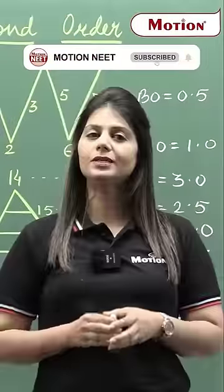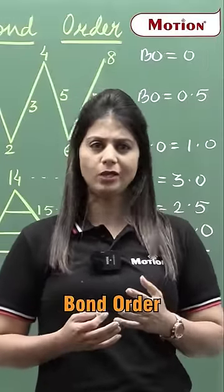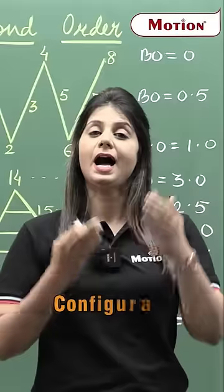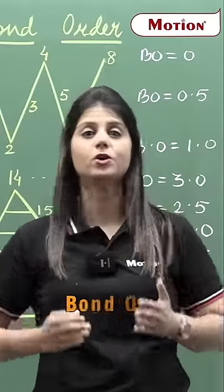For Molecular Orbital Theory, the bond order formula is very easy: Nb minus Na divided by 2. But the traditional process is lengthy. You have to write the configuration, count the electrons, put the values in the formula, and then calculate the bond order.